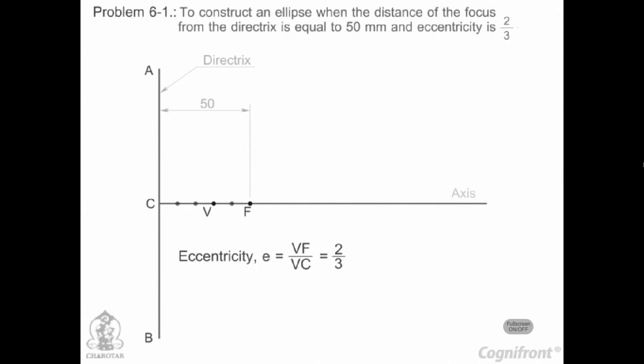Let us now construct a scale on the axis which will directly give the distances in the required ratio. At V, draw a perpendicular VE equal to VF. Draw a line joining C and E. Thus, in triangle CVE, VE upon VC equals VF upon VC equals 2 by 3.